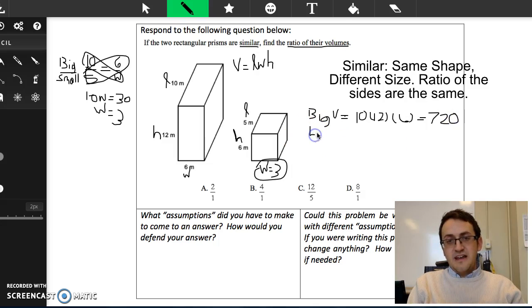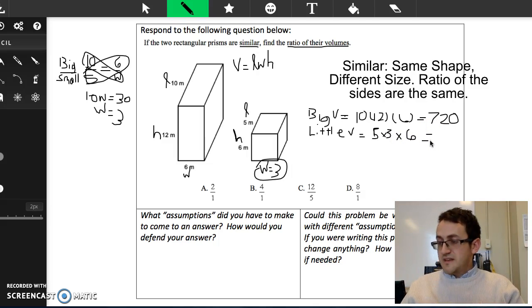And then I'm going to do my little v. So this is the volume of my little shape. And I'm going to do for this 5 times, oh actually I'm going to do the width which is 3 times 6. So we're just multiplying those three sides. And what we end up with as a result, let me get my calculator out. So I got 5 times 3 times 6 and I get 90.